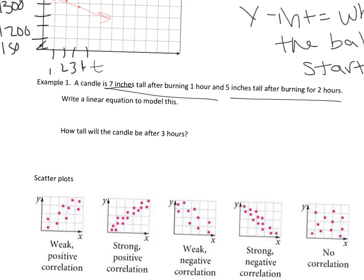If the candle is 7 inches tall at 1 hour and 5 inches tall at 2 hours, we can make two ordered pairs. We need to be careful that time is the x, since time is the independent variable. So our points are (1, 7) and (2, 5). To write an equation, go back to writing an equation given two points — you'll want to use point-slope form.